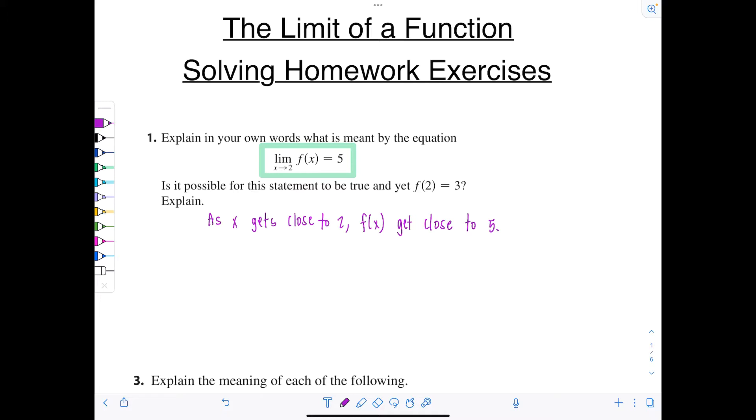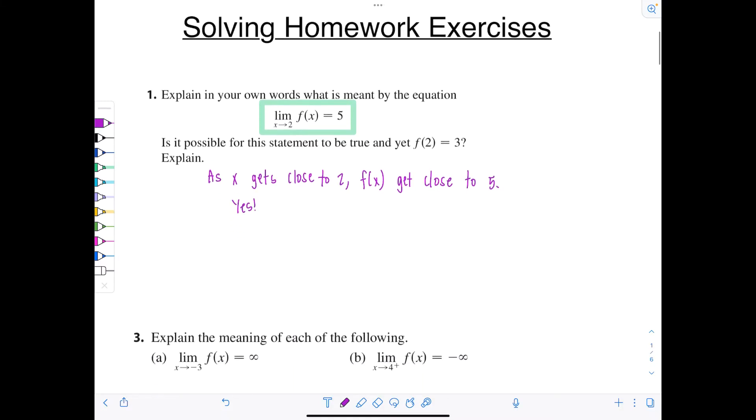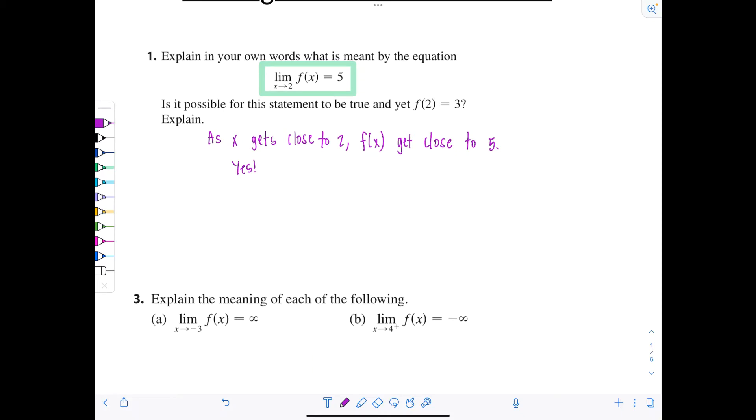Second part says, is it possible for this statement to be true and yet f of 2, so the function value at 2 is 3? Explain. Well, yes, this would be possible. Let me show you just a quick sketch so you see how it would be possible. So remember, the limit of a function tells you what the graph is tending towards as you approach a certain value, but it does not tell you exactly what the graph is equal to at that point.